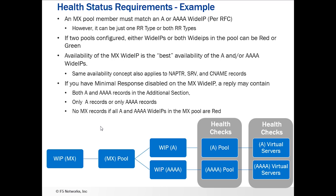The same availability concept applies to our NAPTR, SRV, and CNAME records, because those have names within them. If any wide IP with the name is available, it's going to show up as green. You can get into situations where you have mixed pools of A and Quad A, and some availability states can make the responses not necessarily be what you want. If minimal response is disabled on the MX wide IP, a reply may contain both A and Quad A records, only A records, only Quad A records, or no MX records if all A and Quad A wide IPs in the pool are red.